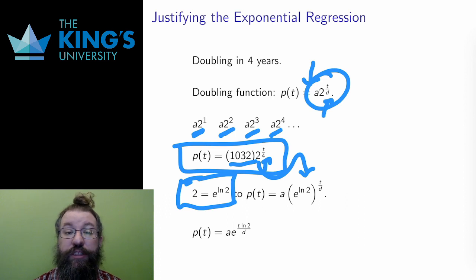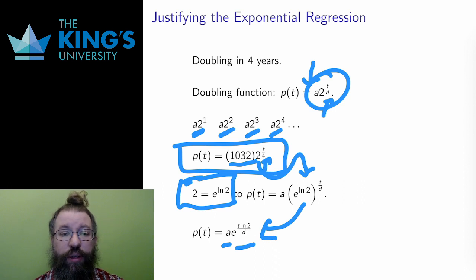So then I can replace 2 with e to the ln 2 in the general form. And finally, the laws of exponents can help me simplify this sequence of two exponents. What I get is p(t) equals a times e to the t times ln 2 divided by d, written as an exponential base e. In calculus, this is indeed the form of the function I would prefer to work with. So let me end that little bit of an aside about using base e.